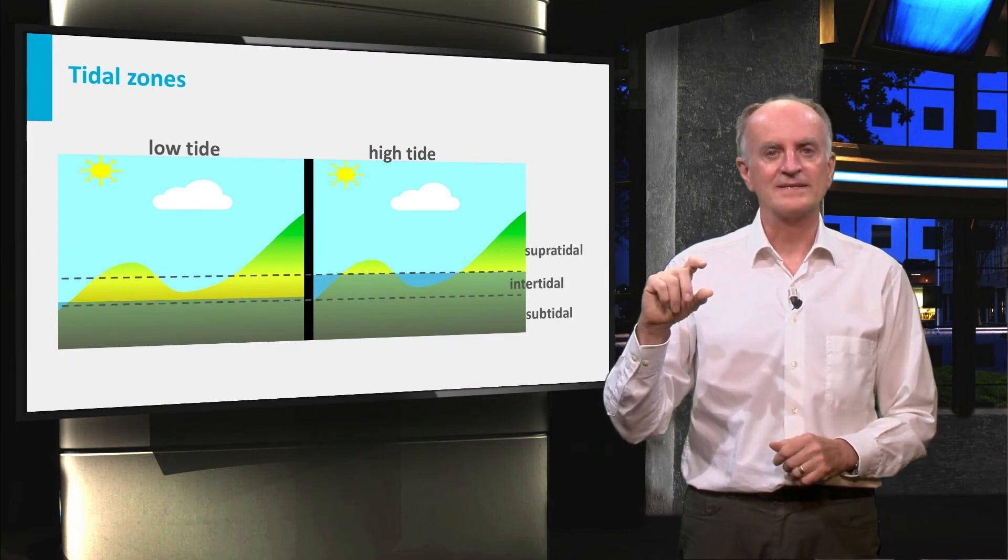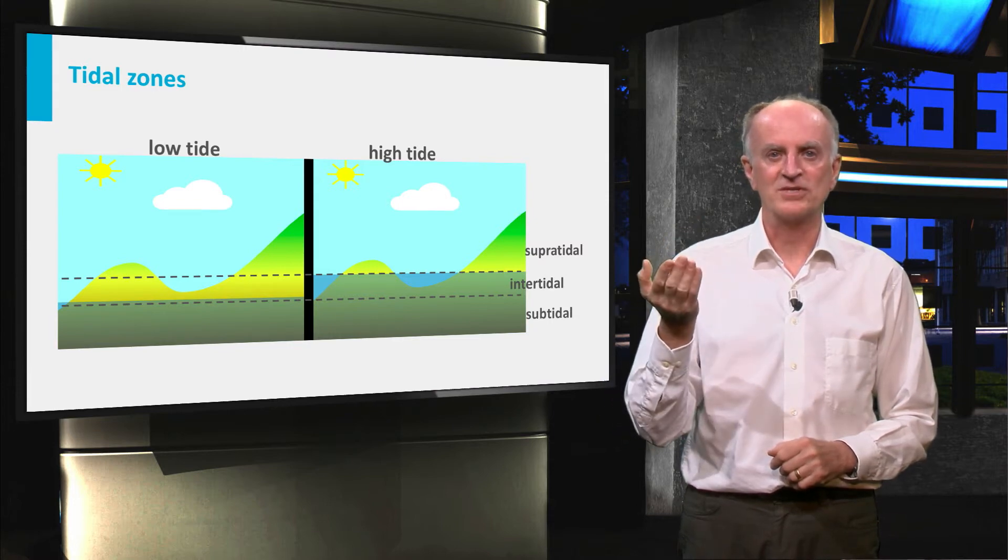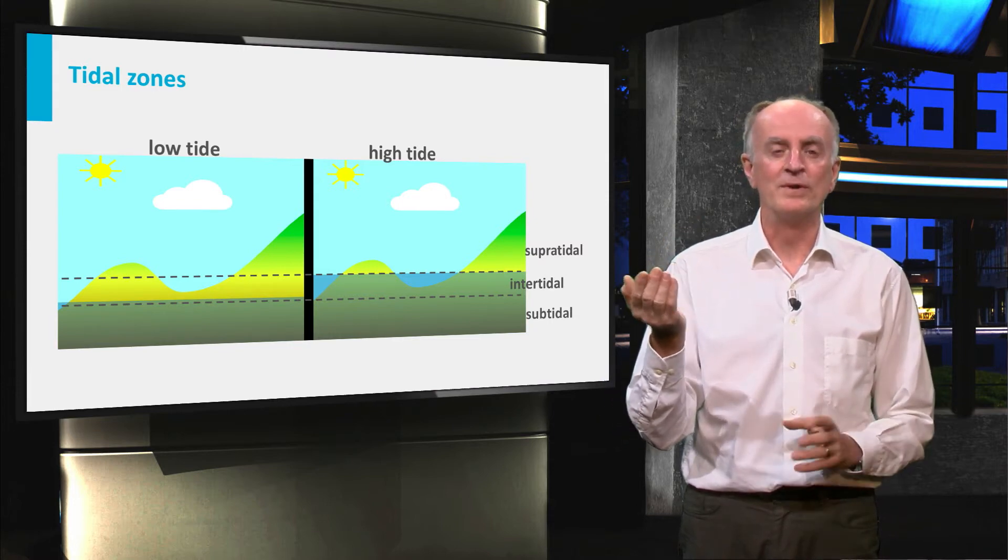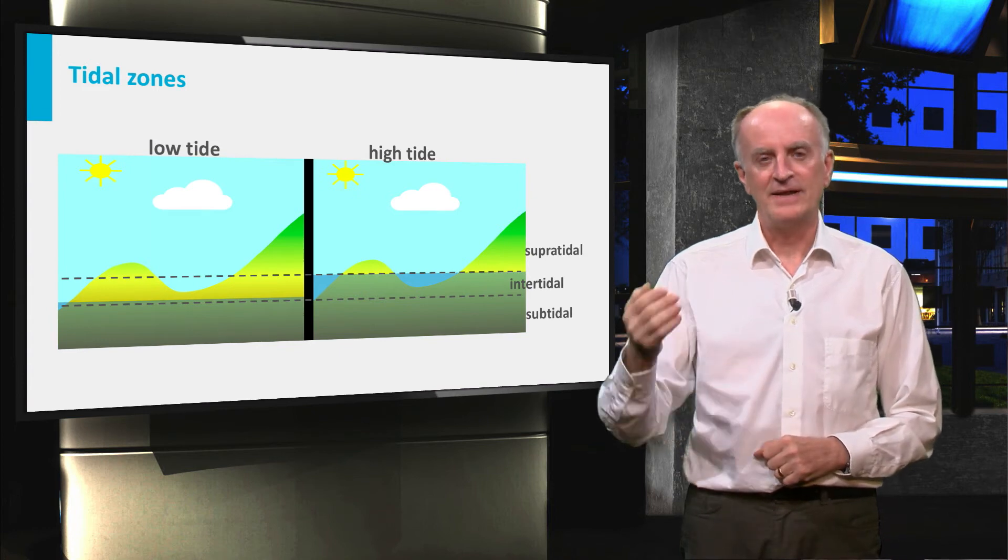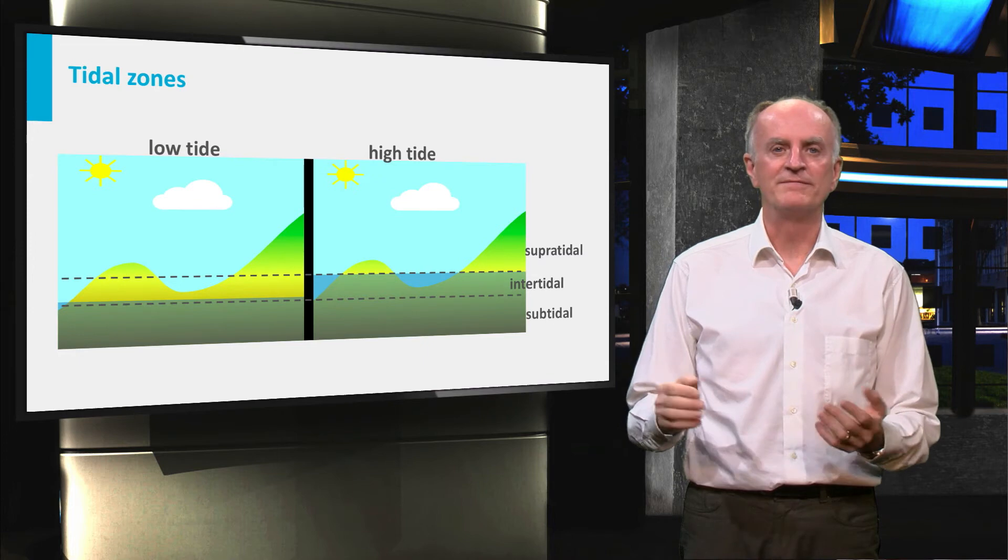This region is called the intertidal domain. Above this we have the supratidal domain, which is brought under water only at very high tides, and underneath is the sub-tidal domain, which becomes emerged only at very low tides.